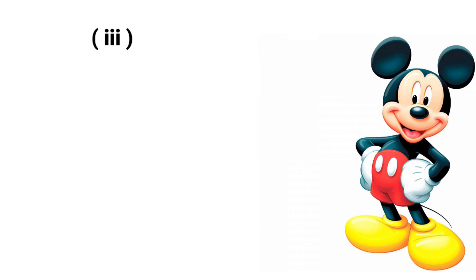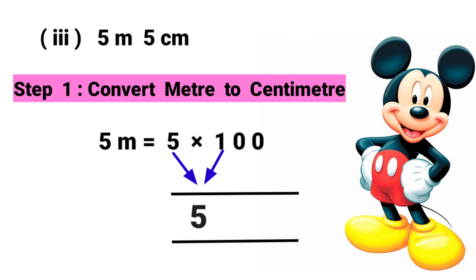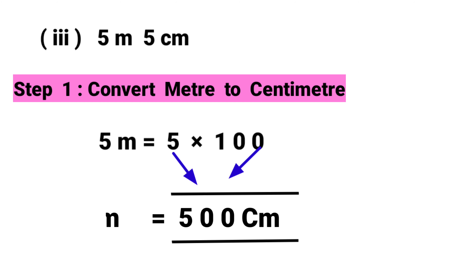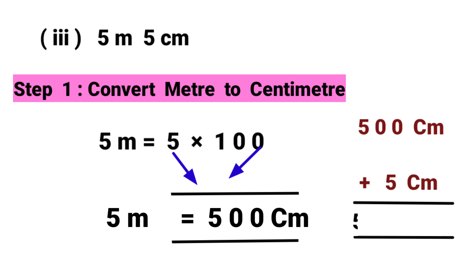Third sum: five meters and five centimeters. The first step is to convert meters to centimeters. Five cross one hundred: one fives are five, zero fives are zero, again zero fives are zero, so five meters is equal to five hundred centimeters. Then add the five centimeters: five hundred centimeters plus five centimeters is equal to five hundred and five centimeters. So five meters and five centimeters equals five hundred and five centimeters.